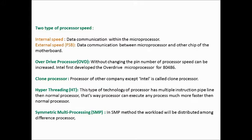Overdrive processor: without changing the pin number, the processor speed can be increased. Intel first developed the overdrive microprocessor for the 80486. Clone processor: a processor from any company other than Intel is called a clone processor, because companies like AMD and VIA copied the microprocessor architecture from Intel.